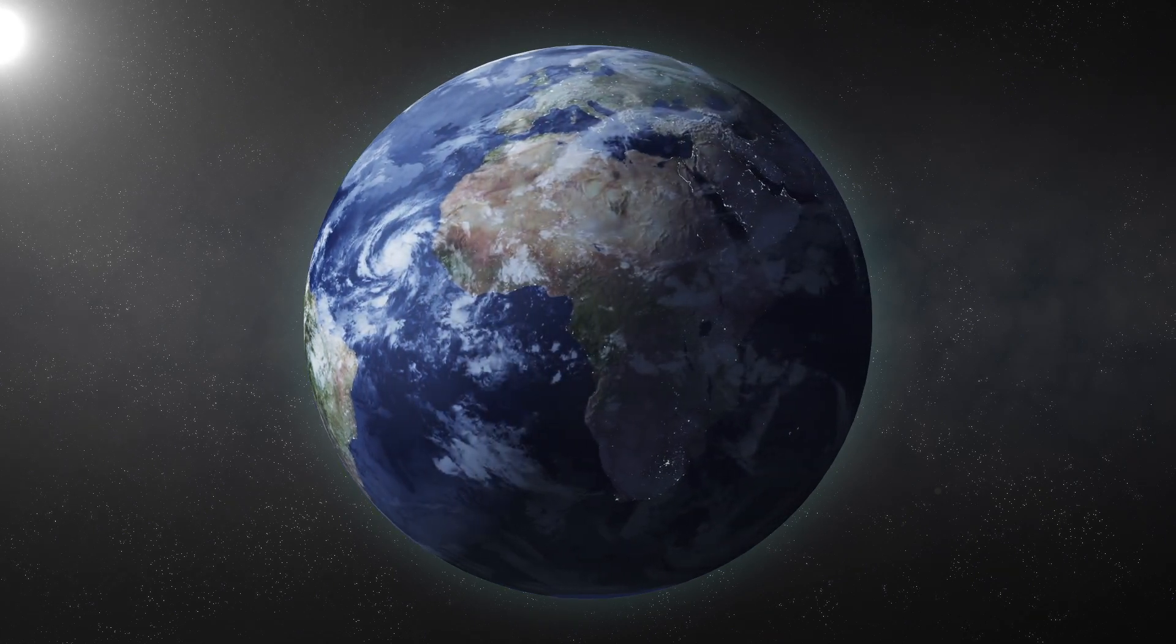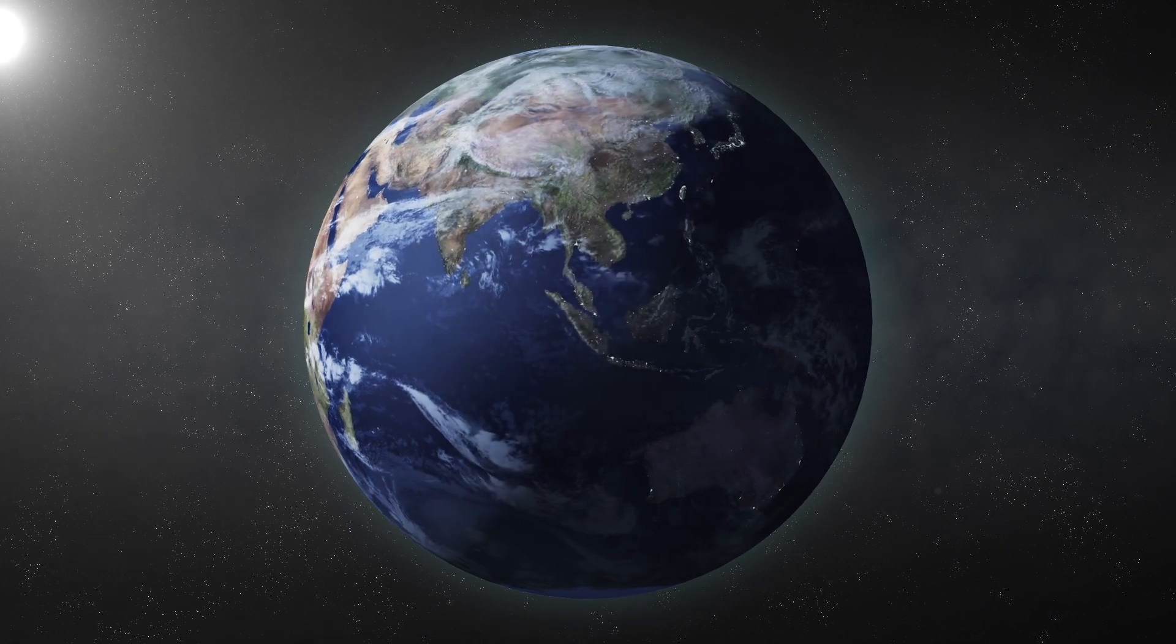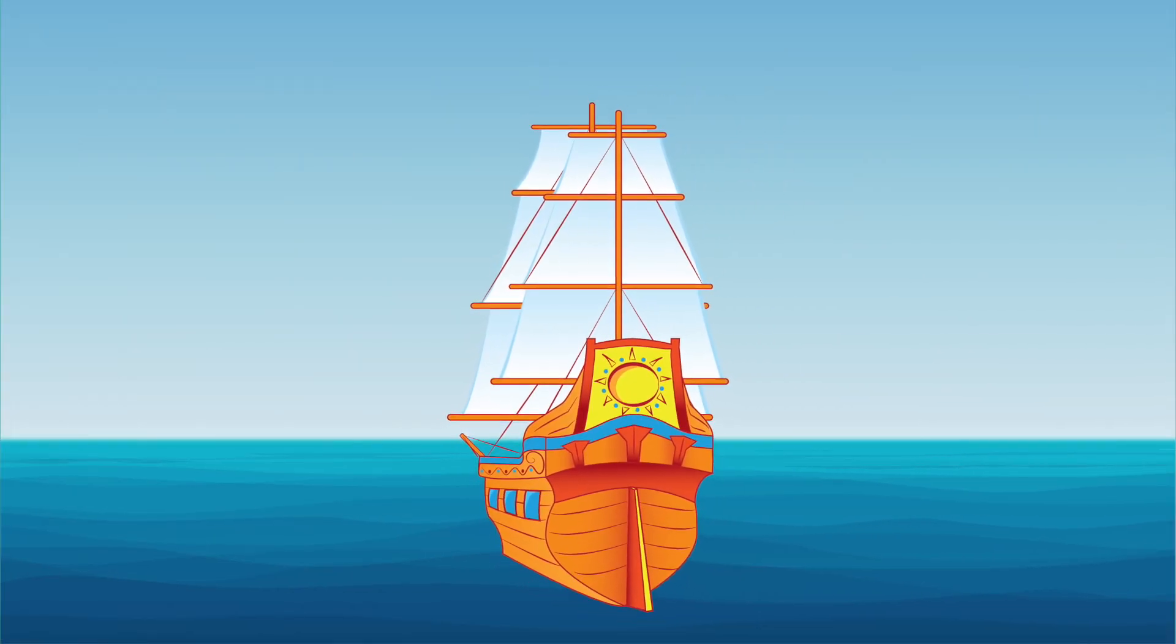One thing I know is that the Earth is round. That's something that scientists have known about our planet for thousands of years. But how did they figure that out? It all started with observations.